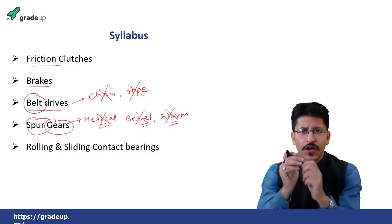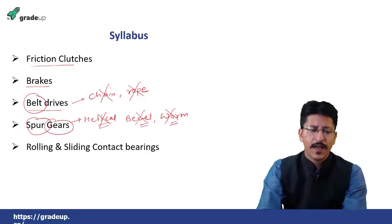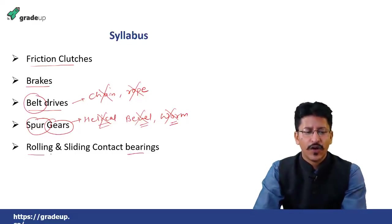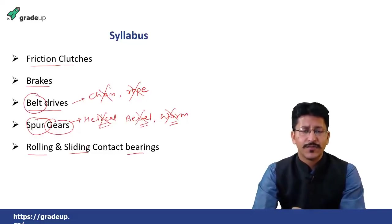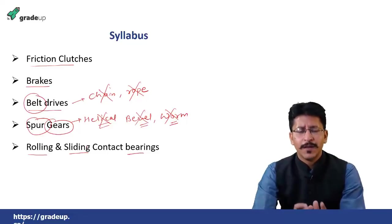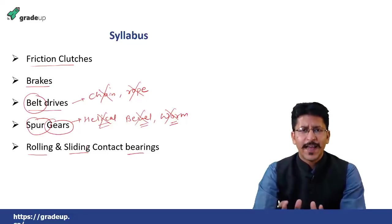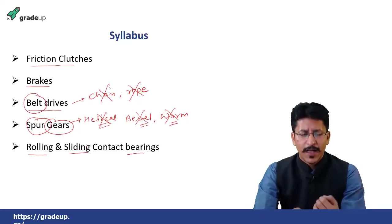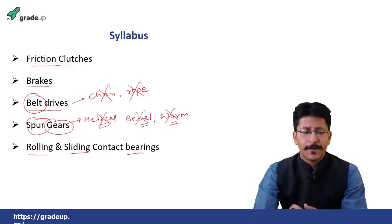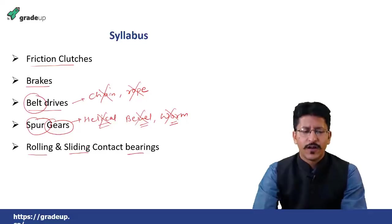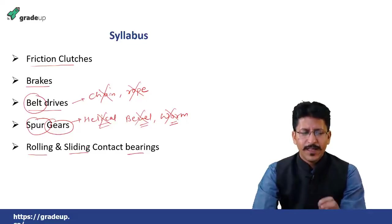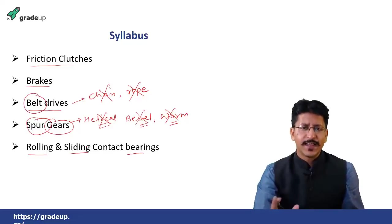Then there are two types of bearings: rolling contact and sliding contact bearings — both are important and questions come from these topics. The questions basically come from two to three key equations, such as Petroff's equation and Mackay's investigation. We will cover these equations when we reach that topic in the lecture series.